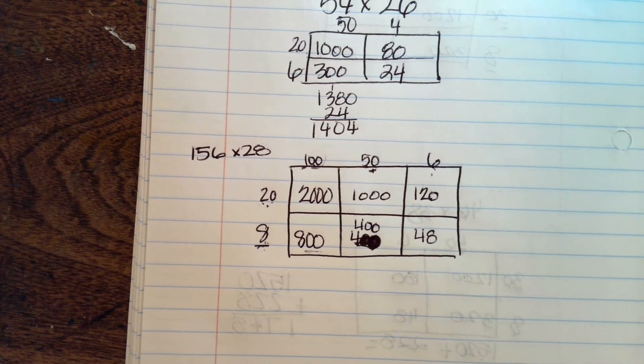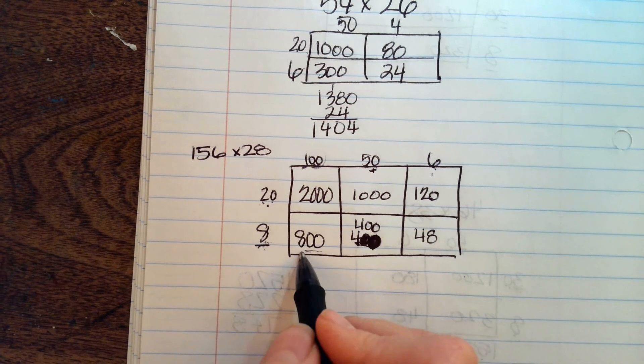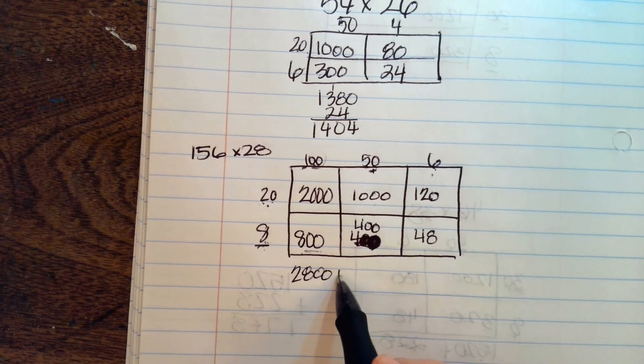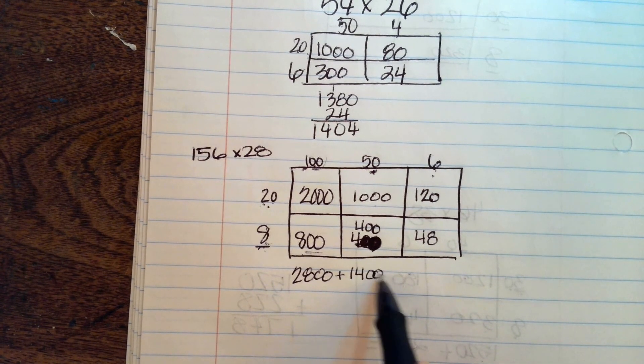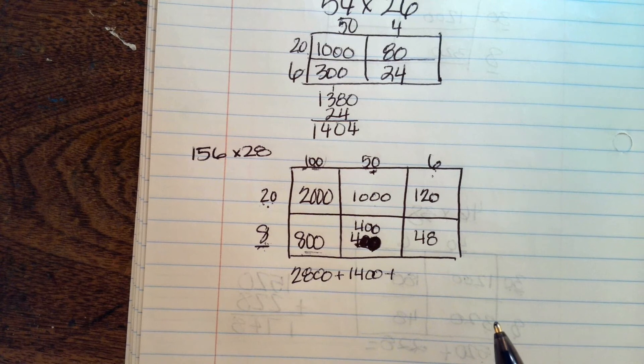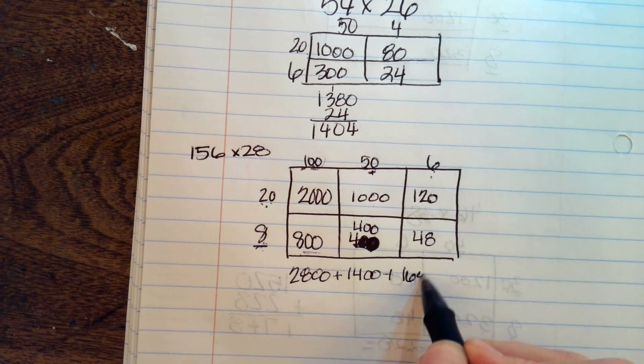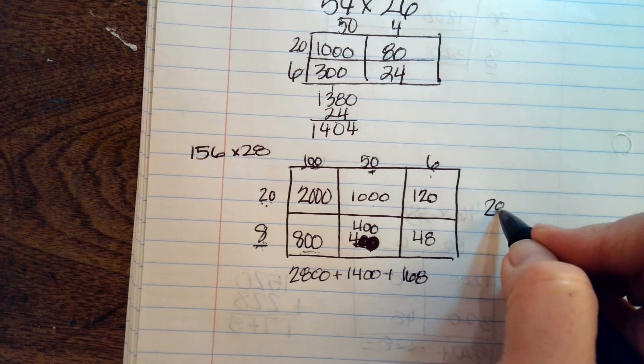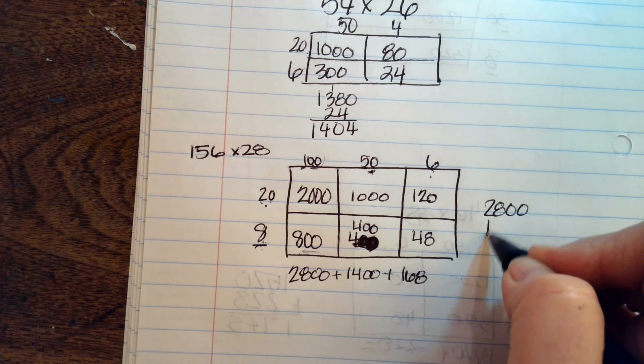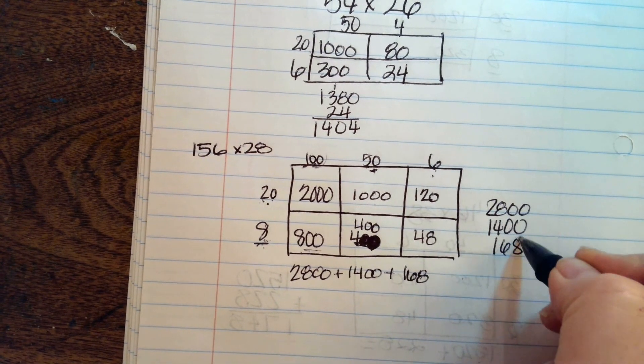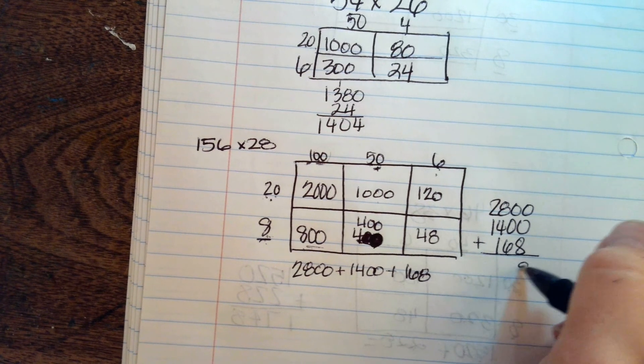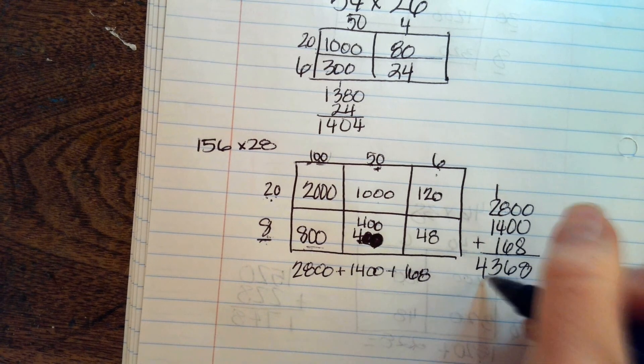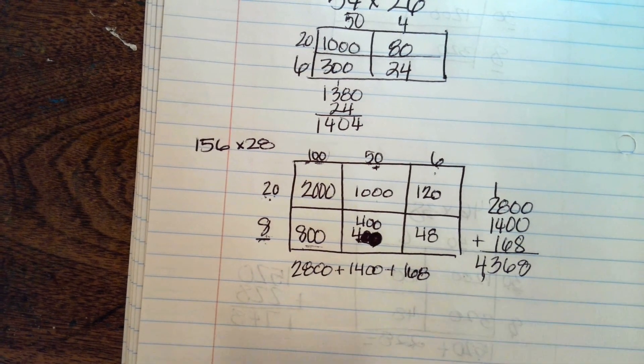Now we add these together. 2,000 plus 800 is 2,800. 1,000 plus 400 is 1,400. And then 120 plus 48 is 168. Now we put them together. 2,800 plus 1,400 plus 168 equals 8, 6, 13, 4,368.